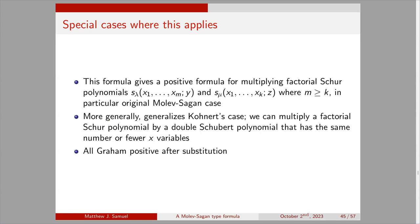This gives a positive formula for multiplying factorial Schur polynomials s_lambda(x_1,...,x_m; y) times s_mu(x_1,...,x_k; z), where m is greater than or equal to k. In particular, when m equals k, this is the original Molev-Sagan case and gives a Molev-Sagan formula that is positive after substitution. More generally, it generalizes the Cronert case: we can multiply a factorial Schur polynomial in x and y by a double Schubert polynomial in x and z that has the same number or fewer x variables, and this is also Gram-positive after substitution.